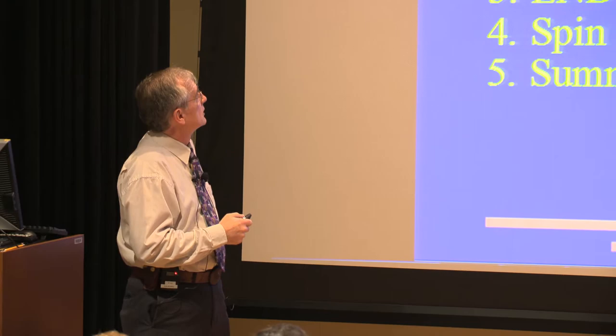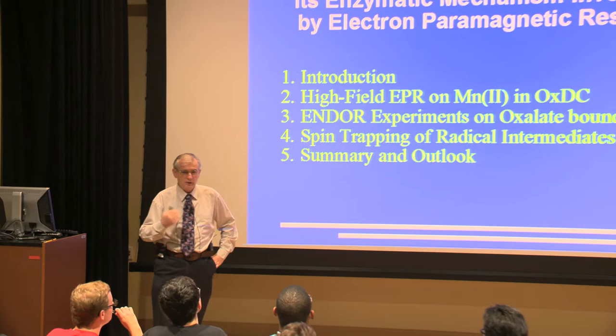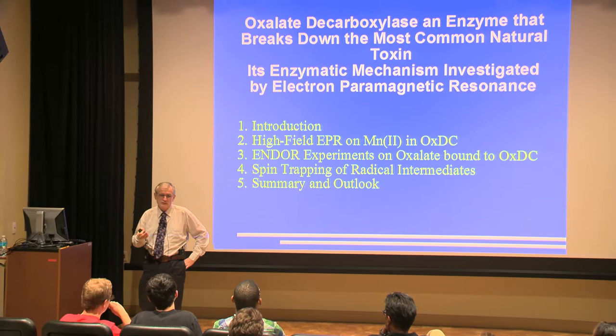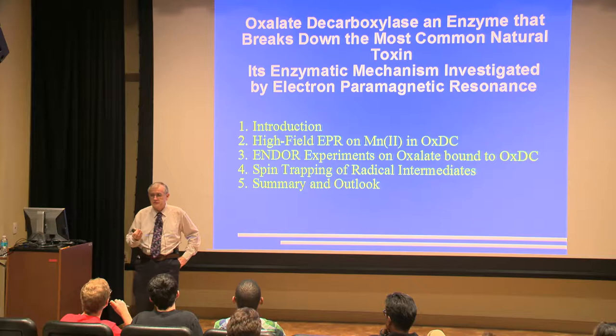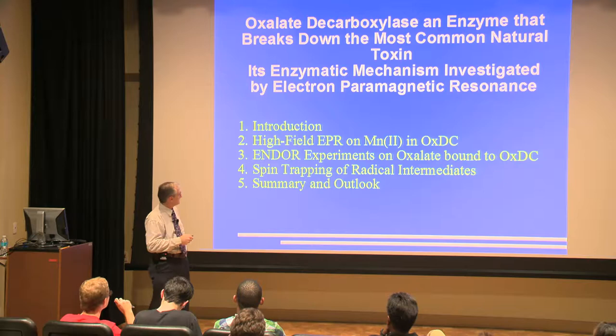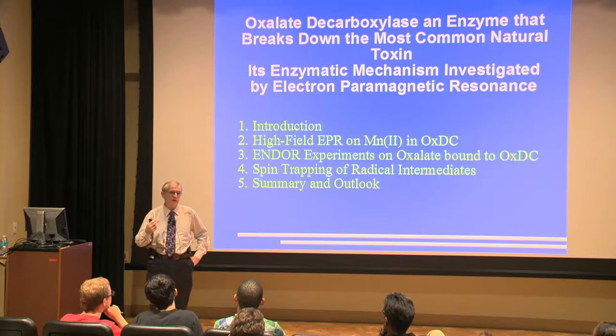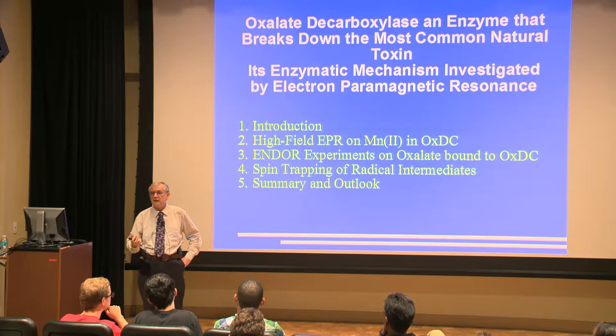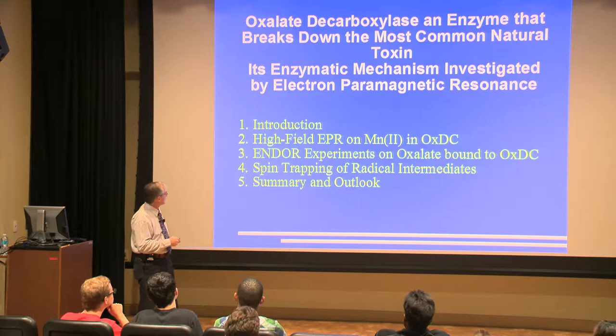With this said, let me introduce you to something I'm doing in my research. I'm looking at an enzyme called oxalate decarboxylase. This enzyme breaks down the most common toxin that we find in nature, oxalate or oxalic acid. How does it convert oxalate into harmless CO2 and formate?